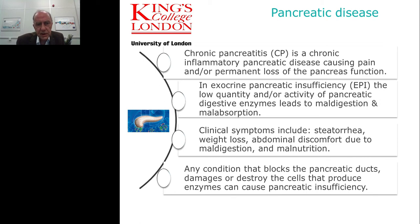The typical clinical symptoms include steatorrhea, because with the absence of lipase in the gut you are unable to break down fats, and therefore you get fatty stool. A first sign of malnutrition may well be weight loss. You can also get abdominal discomfort because of undigested food. Any condition that can block the pancreatic duct can cause chronic pancreatitis, and anything that causes damage or destroys the enzyme-producing cells within the pancreas can cause pancreatic insufficiency.